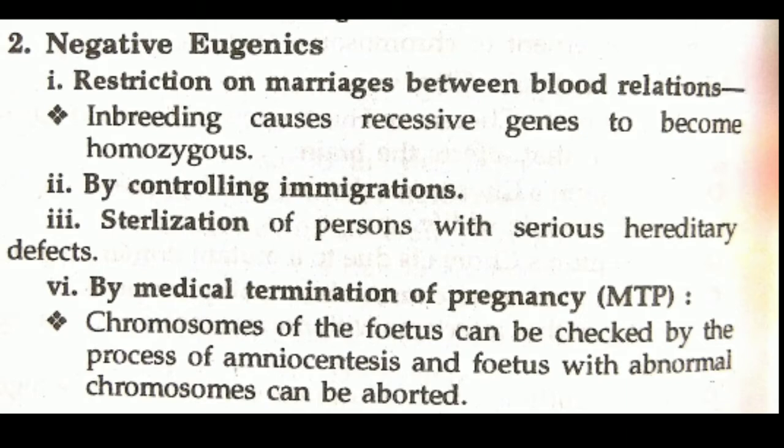If immigration leads to a homozygous condition, there is significant gene flow and gene loss in the population. If there is a bad gene in the population, it can also play a negative role. Next is sterilization of persons with a serious hereditary defect — if a person has a very serious hereditary disease that passes from generation to generation, then sterilization may be needed.